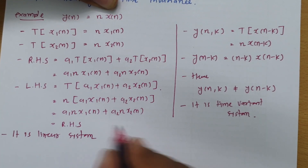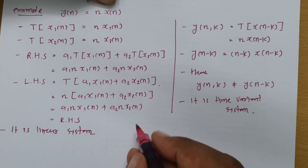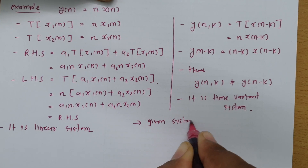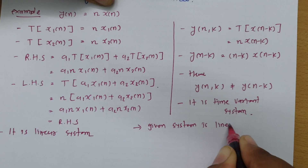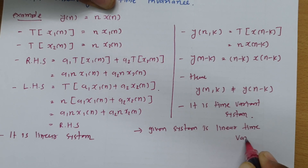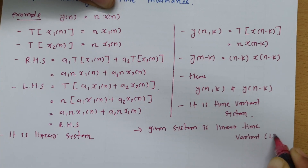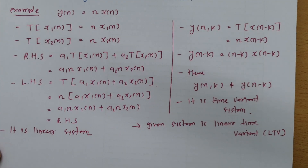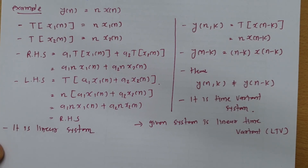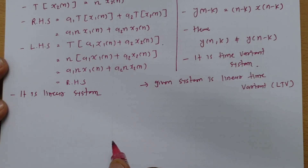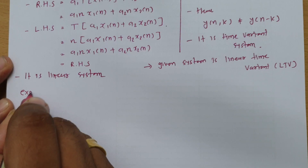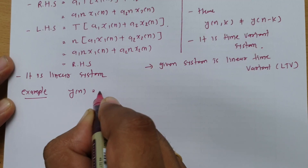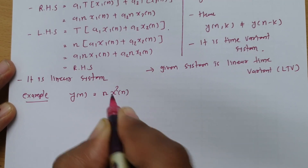So we can say this system is linear as well as time variant, and therefore the given system is a linear time variant — LTV — system. Now let us have one more example to make it more clear. I will be considering the case y(n) = n·x²(n).